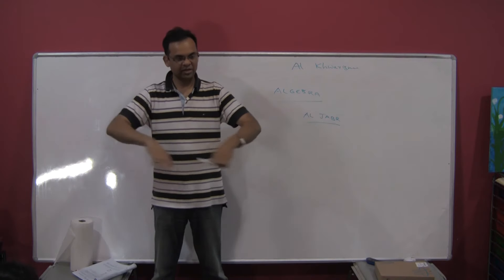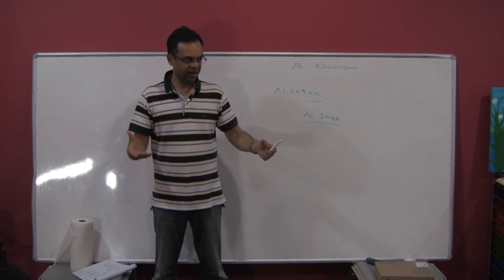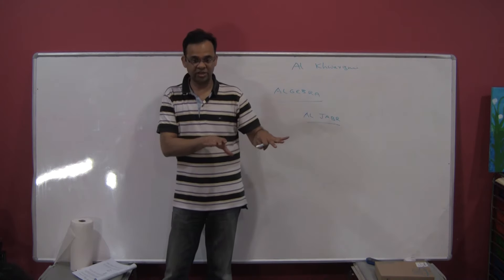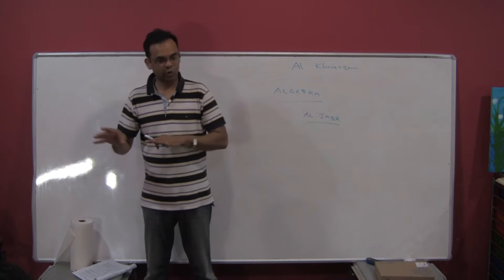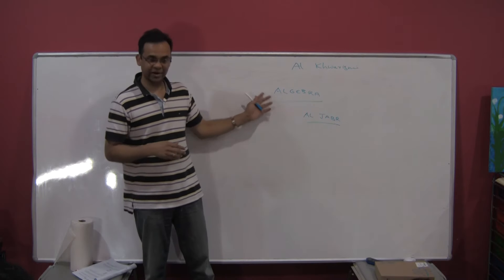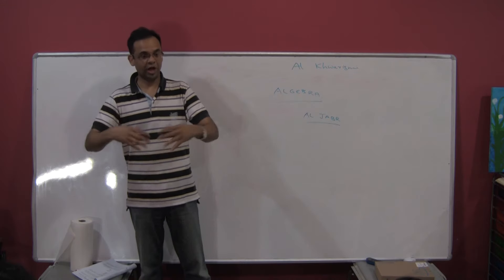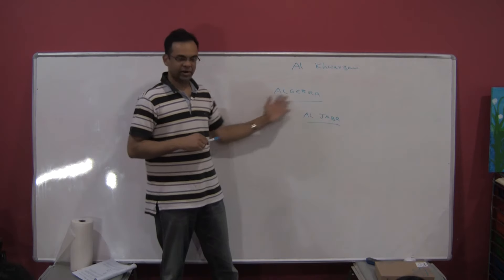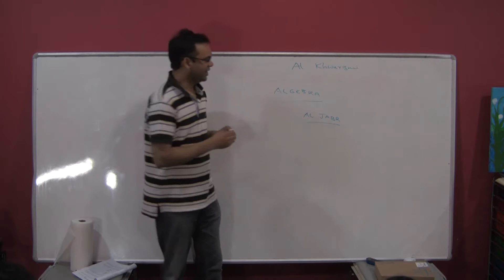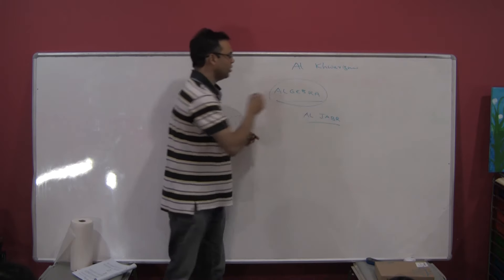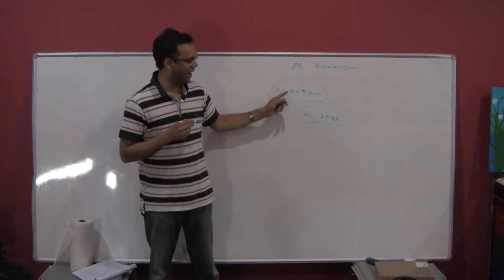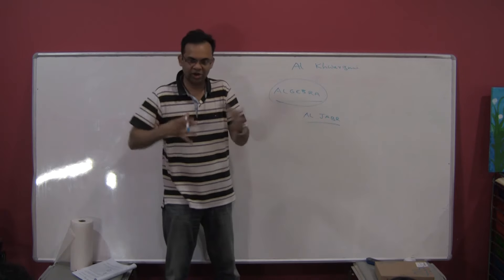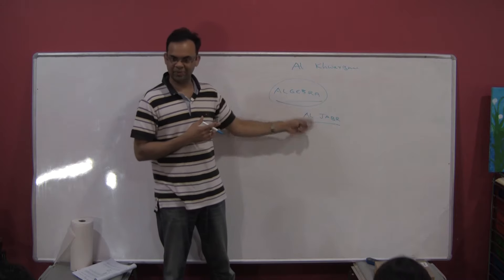Has anybody heard the word 'algorithm'? Algorithm in mathematics is a kind of procedure through which you can solve some problems. You'll learn more when you do computer science — algorithms are very common. The word 'algorithm' came from Al-Khwarizmi's name. Isn't that interesting? So, as a brief note on languages — Greeks dominated Europe up to the 2nd century BC. Then Romans conquered Europe and Latin became the predominant language, staying until the 16th or 17th century. Around the 12th and 13th centuries AD, Latin was the predominant language in Europe, so they translated the book into Latin.